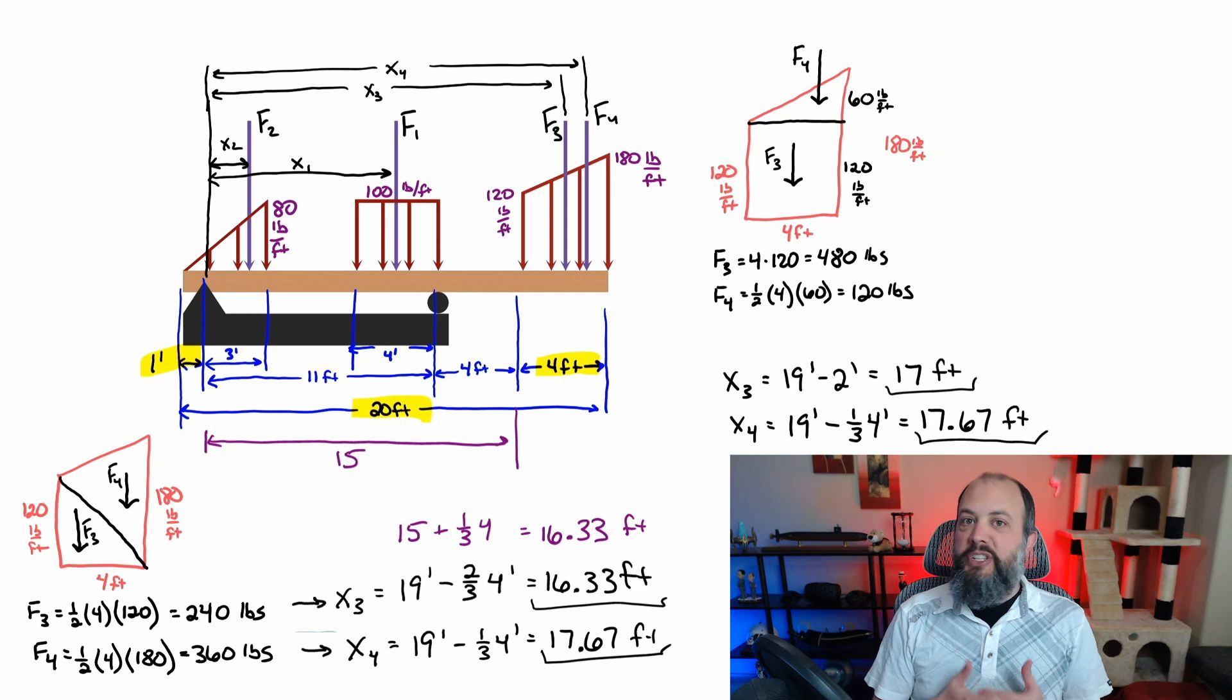Now, which method you choose to use is completely up to you. My personal preference is to use the rectangle and triangle method because I think rectangles are the easiest shapes of all. So why wouldn't I want to use one?